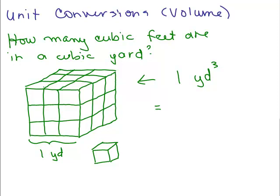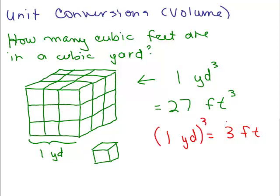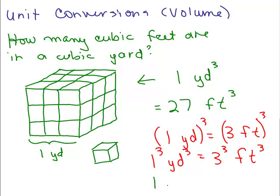If you look at the first level up in the front, you've got nine, and then going back there's another nine and another nine. So this is 27 cubic feet. Now we know that one yard equals three feet. So a simple way to figure this out is if you want to figure out what a cubic yard is, you cube both sides of this equation. That's the same as one cubed yards cubed equals three cubed feet cubed, which gives us one cubic yard equals 27 cubic feet — the same thing we got when we were looking at the box.